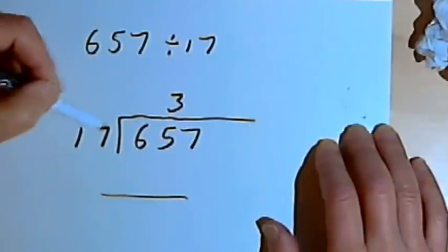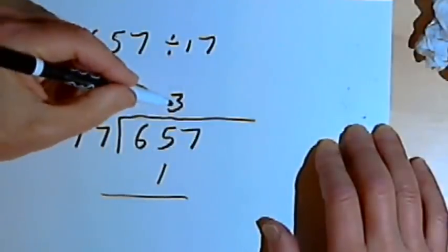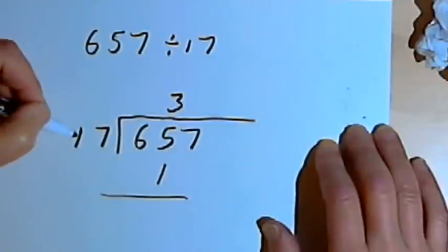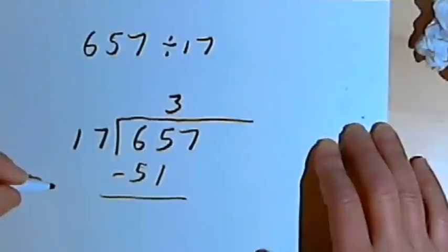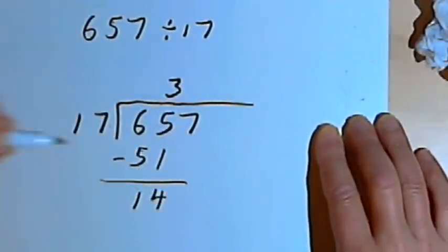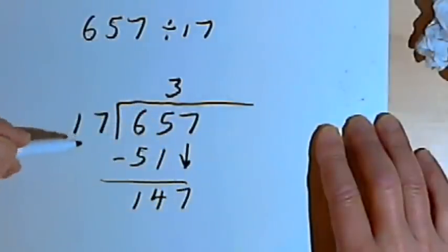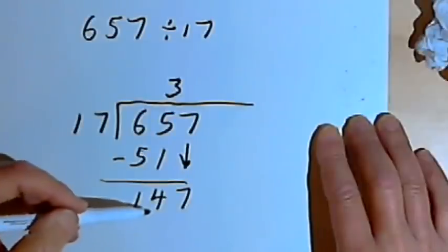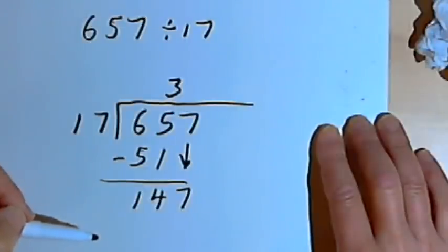Okay, so let's try 3 times 17. 3 times 7 is 21. I'm going to carry a 2. 3 times 1 is 3, plus the 2 is 5. And now when I subtract, I'll get 14. Okay, so that's fine. Now I've got to bring down the next number, which is a 7. And once again, I've got to estimate how many times would 17 go into 147. And this isn't your typical kind of math fact.